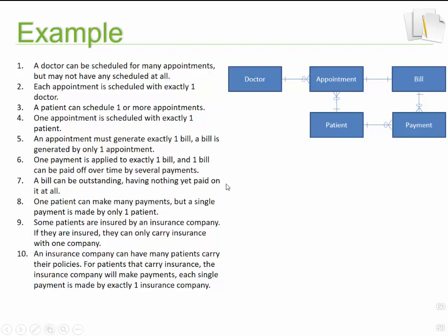Looking at number nine — we're almost done. Some patients are insured by an insurance company, so now we need to think about insurance. There's a link between patient and insurance. Some patients are insured by an insurance company, meaning it's optional — not everybody is insured. If they are insured, they can only carry insurance with one company, so it's a two-to-one relationship because you can't have insurance with multiple medical providers.